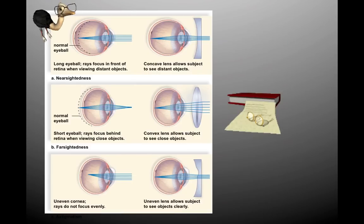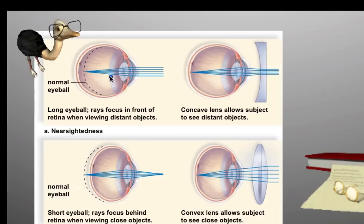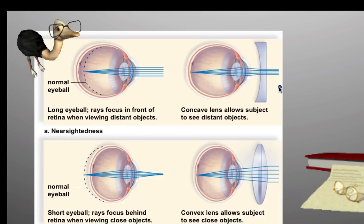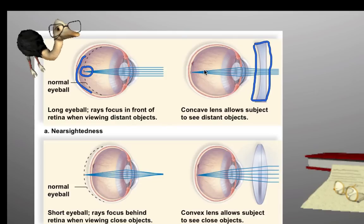A couple other things to mention is the need for glasses. People need glasses because the image that should form on their retina doesn't quite reach it or goes too far. In the case of someone who's nearsighted — who can't see things far away — their retinal image doesn't make it all the way to the retina; it stops short. By putting a concave lens in front of the eyeball, you can correct that so it focuses on the proper place.